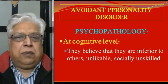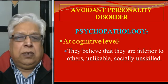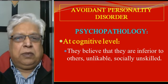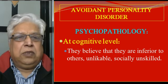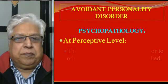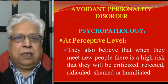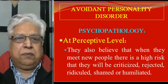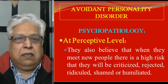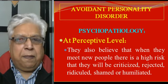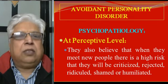At the cognitive level, these people believe that they are inferior to others. They find themselves unlikable and socially inadequate and unskilled to deal with interpersonal relationships. At the perceptive level, they also believe that when they meet new people, there is a high risk that they will be criticized, rejected, ridiculed, shamed, or humiliated.